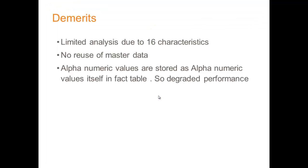What are the disadvantages of a star schema? It's limited analysis due to 16 characteristics, no reuse of master data, and alphanumeric values are stored as alphanumeric values in the fact table, which degrades performance. The fact table can hold only 16 characteristics, out of which 3 are reserved for data package, time, and unit. So we can have only 13 dimensions possible. Master data is stored as M01 or customer as C01 and cannot be reused inside the cube.